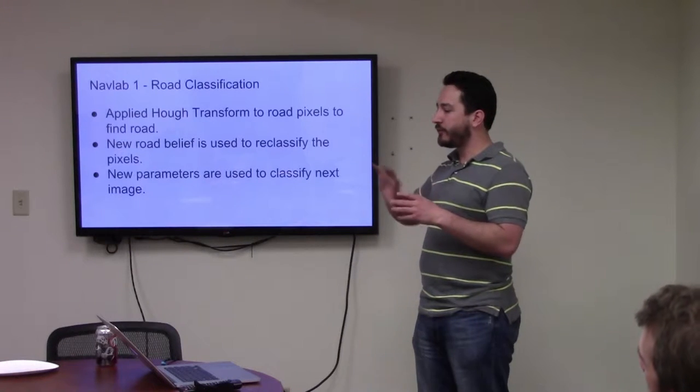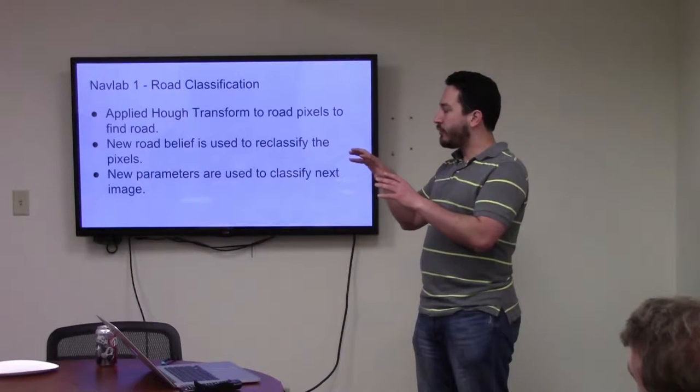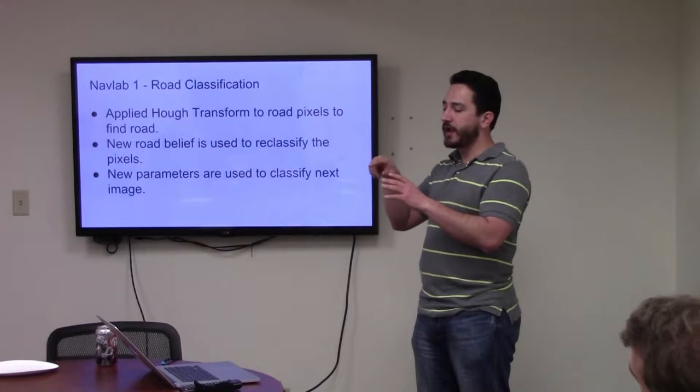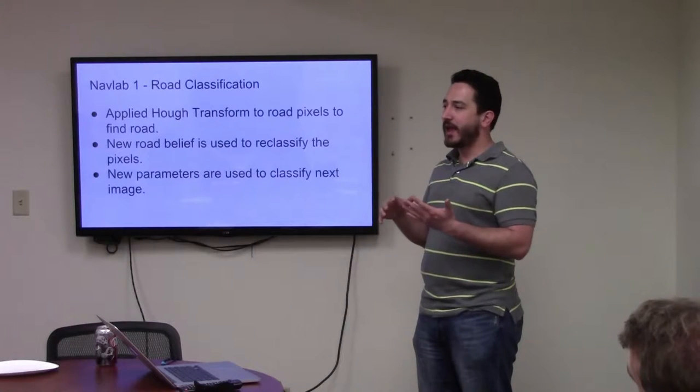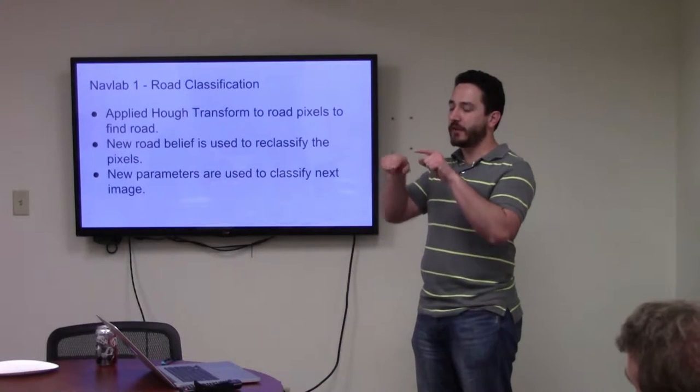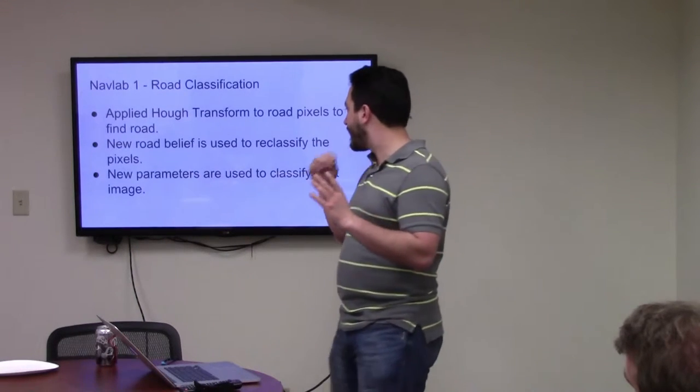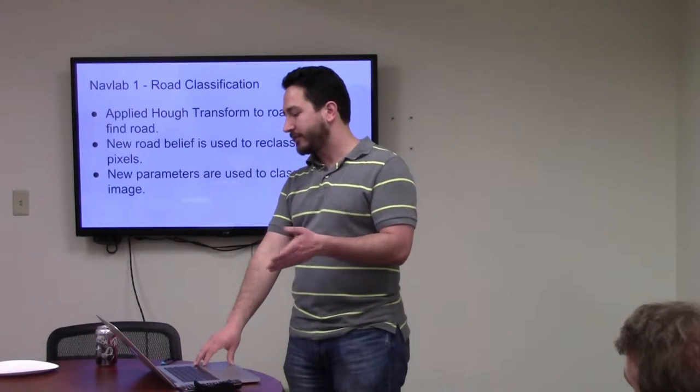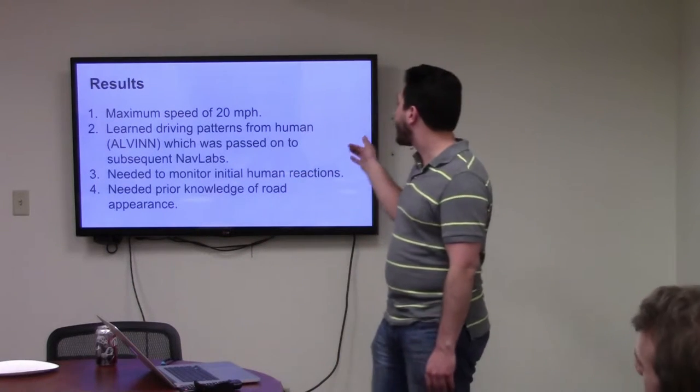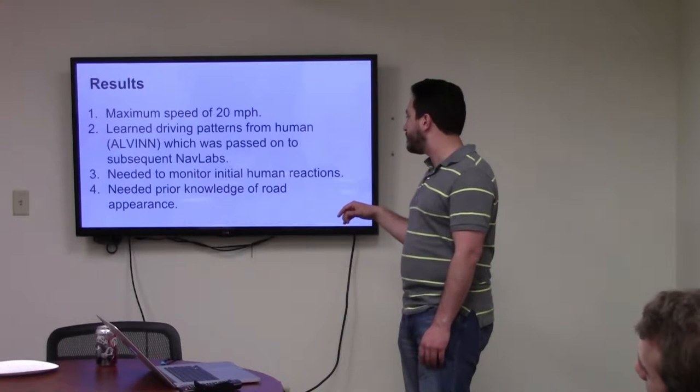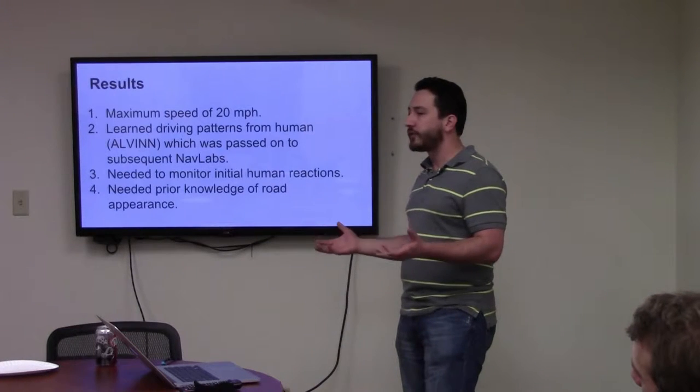They had a system called Alvin, which was a neural network that they used. They would have a driver drive the vehicle for like five minutes and Alvin would be recording the road, and it would generate from watching the driver which way the steering wheel should turn based off of what direction the road was going. And it had some number of inputs and it had like five outputs based on telling you like which of five ways the steering wheel should be turned.